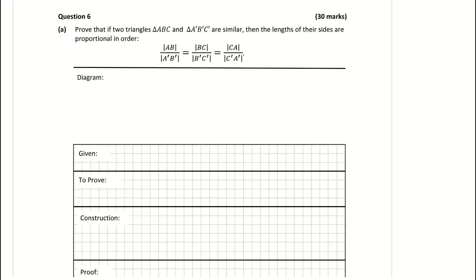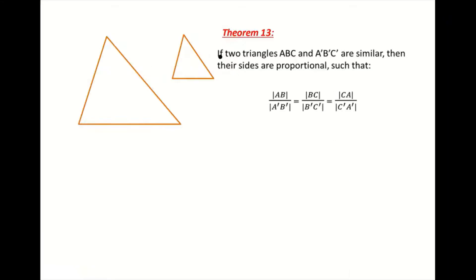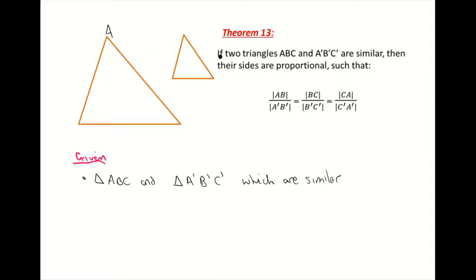Question 6a is Theorem 13 from our Leaving Cert course. So let's write down what we're given first of all. We're given two triangles. The triangle with corners — my vertices — a, b and c, and they correspond to the similar triangle on the right, which I'm going to label a dash, b dash and c dash, because we know with similar triangles the angles are the same size.